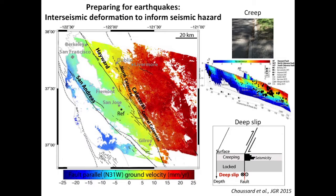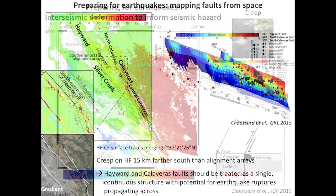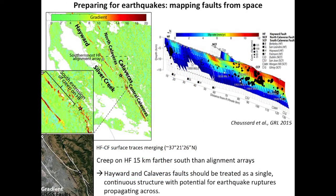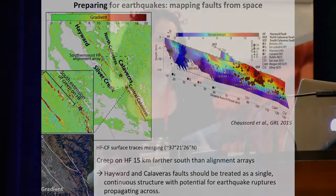Looking at interseismic deformation, we can use InSAR alone without GPS to get at the deep slip on the fault and the shallow slip due to creep. From this map, we can also do a gradient map of this shallow slip due to creep to map faults from space. This is very important because we get better constraints on where faults are linked — as in the case of the Hayward-Calaveras fault junction, meaning we can have a larger earthquake on this structure.